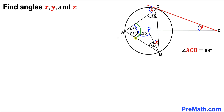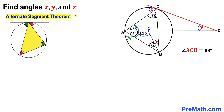Now let's focus on angle BAC. This is the sum of two individual angles: 32 degrees plus 42 degrees, which gives us 74 degrees. Next, let's recall the Alternate Segment Theorem: the angle between a tangent and a chord equals the inscribed angle on the opposite side. Since angle BAC is 74 degrees, the corresponding alternate segment angle is also 74 degrees.